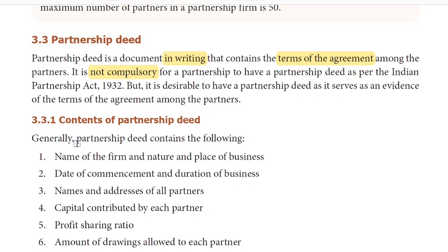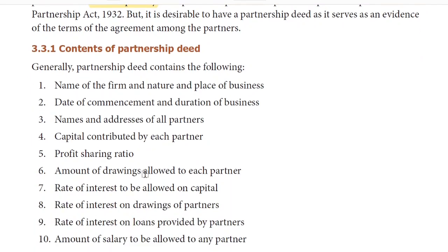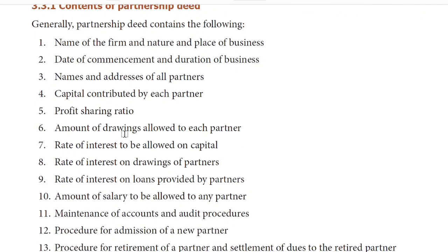Friends, in your book, there are items available on the contents of partnership deed. All the items generally included in a partnership deed are: First, name of the firm and nature and place of business. Second, date of commencement and duration of business. Third, name and addresses of all the partners. Fourth, capital contributed by each partner. Fifth, profit sharing ratio.